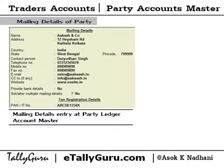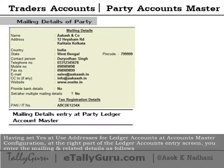Mailing details: having set yes at 'Use Addresses' for ledger accounts at account master configuration, at the right part of the ledger accounts entry screen, you enter the mailing and related details as follows.